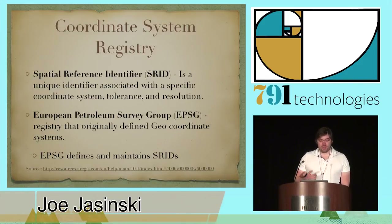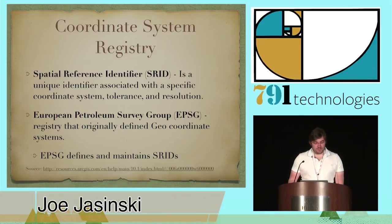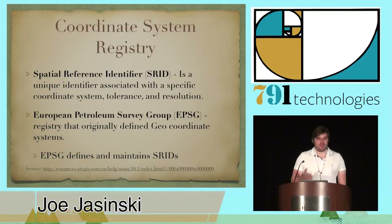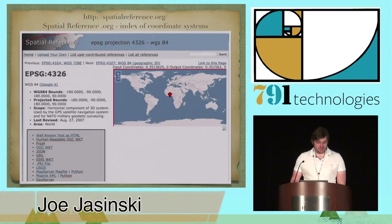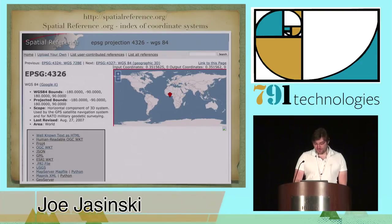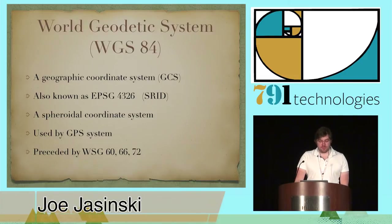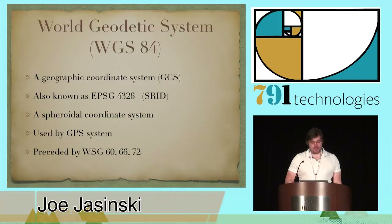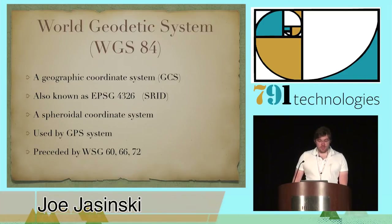A coordinate system registry is another thing. The primary registry is called the EPSG, an authority that catalogs and maintains different coordinate systems. It uniquely identifies coordinate systems by a spatial reference ID. There's a great resource called spatialreference.org, which is a nice index for coordinate systems with lots of information and definitions in a variety of formats. One very common coordinate system you'll encounter is WGS84 — a geographic coordinate system representing the Earth as a spheroid. It's used by the GPS system, so you'll find a lot of data encoded in it. It also goes by the name EPSG:4326.